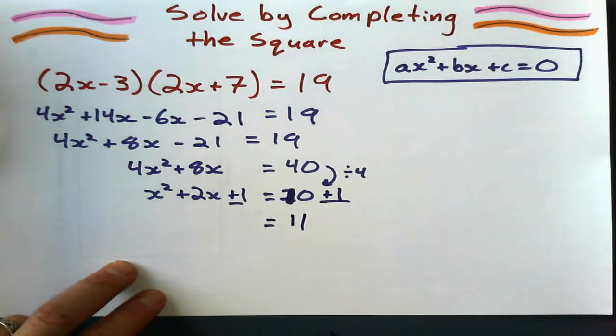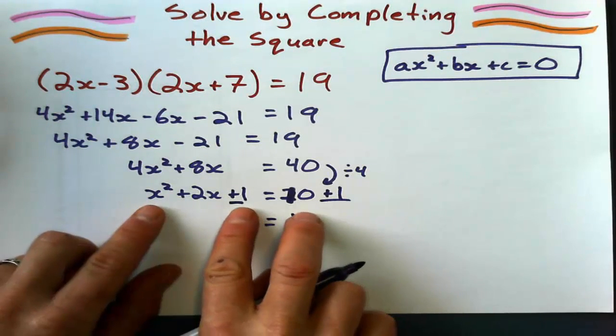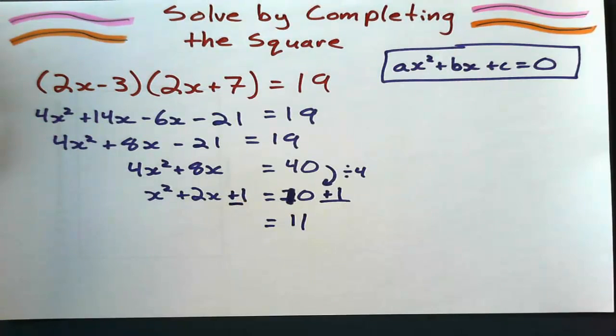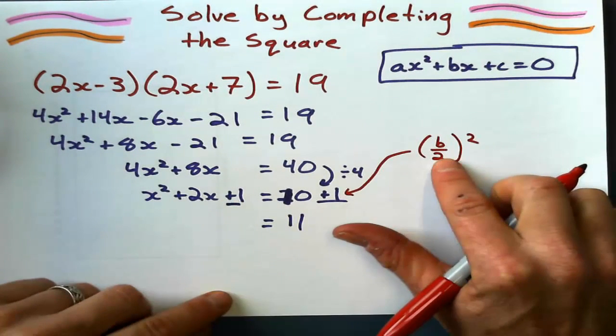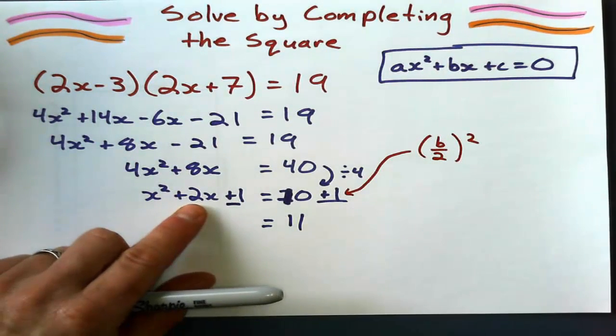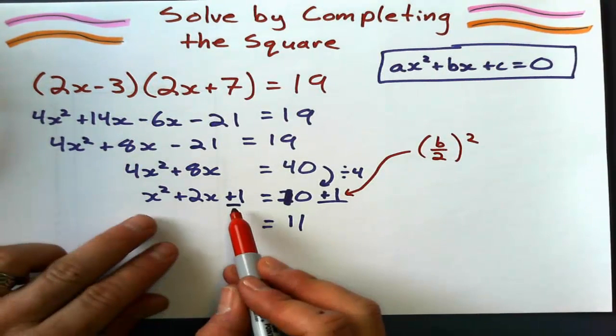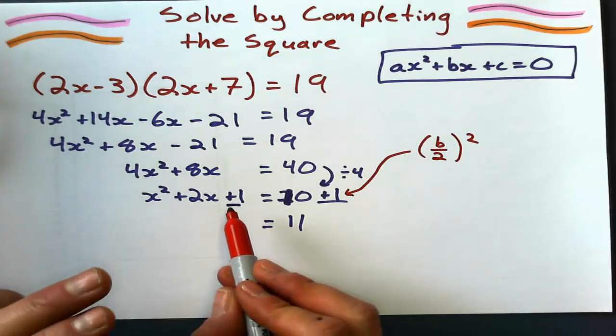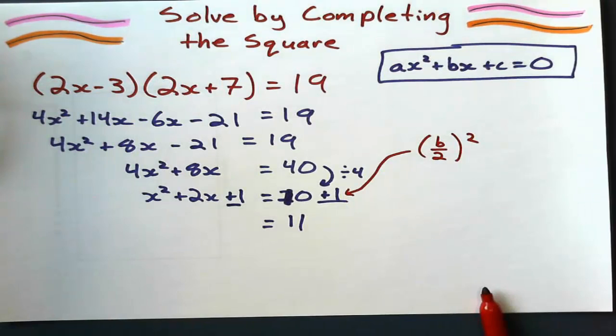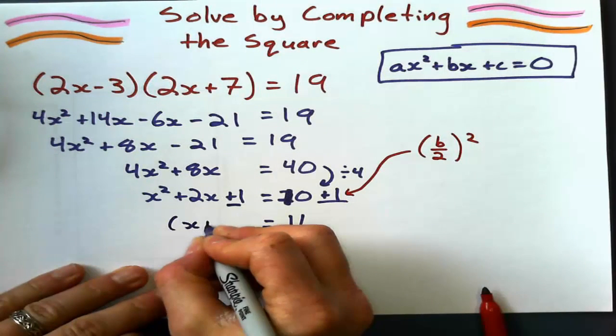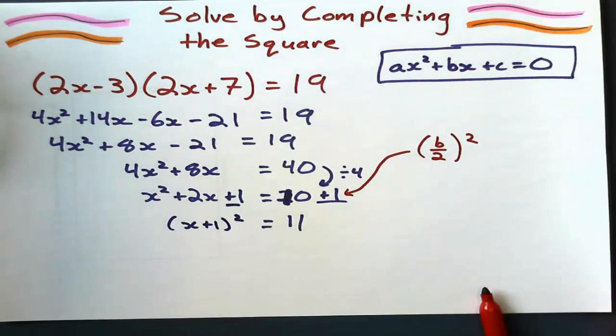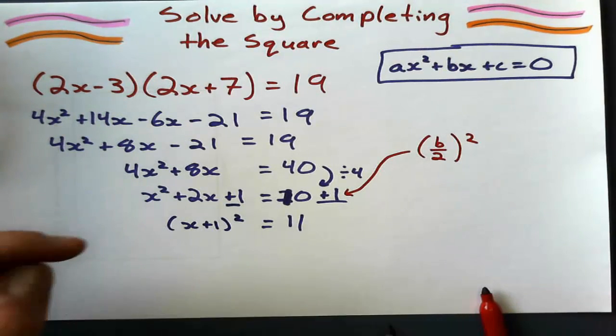So over here, I get 11. Now when I do that trick here, that trick there of taking half of b and squaring it, b is the coefficient of the x term, what I will always get here is that perfect square that factorizes to x plus 1 squared, every time. That's the whole goal of completing the square, and that's why it's called completing the square.